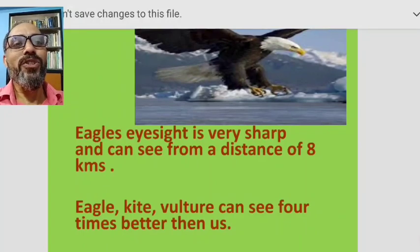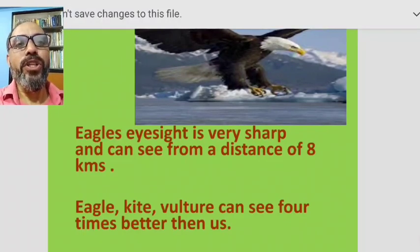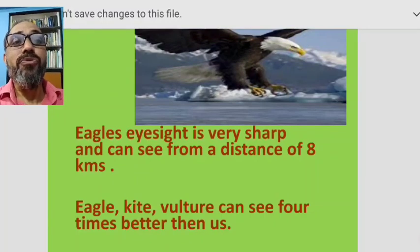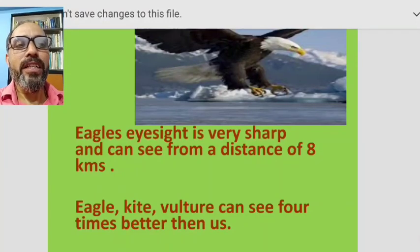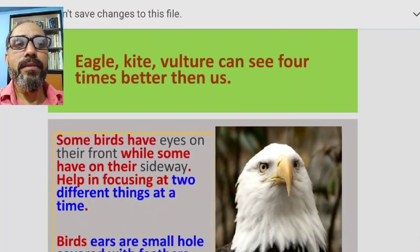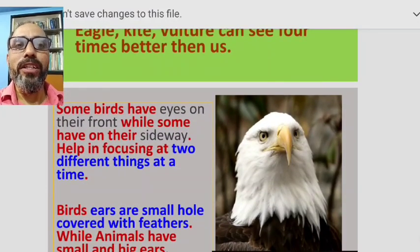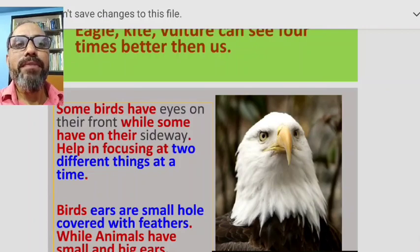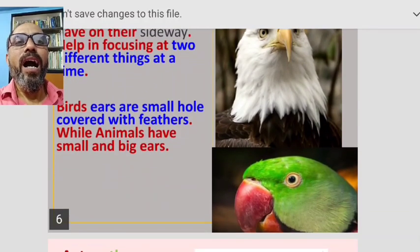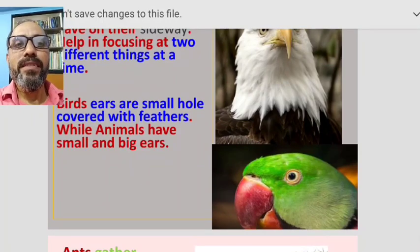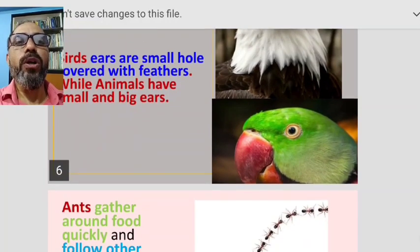Let us see how some birds use their sense organs. The eagle's eyesight is very sharp and can see from a distance of eight kilometers. Eagles, kites, and vultures can see four times better than us. Some birds have eyes on the front while others have eyes on the side, helping them focus on two different things at a time. Birds' ears are small holes covered with feathers, while animals have small and big ears.